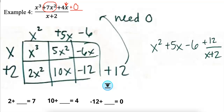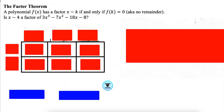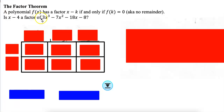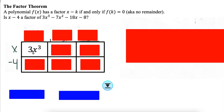We are going to figure out if it is a factor. A polynomial f of x has x minus k as a factor if and only if f of k equals 0 — that's a fancy way of saying there is no remainder. Our question asks: is x minus 4 a factor of this polynomial? If I divide them and there is no remainder, then it is a factor. Press pause and go watch part 3, which is going to be super short.